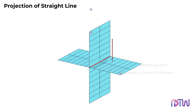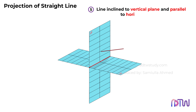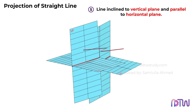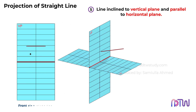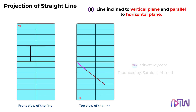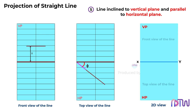Moving on to Position 5: the line can be inclined to the vertical plane and parallel to the horizontal plane. The line makes an angle with the vertical plane while remaining parallel to the horizontal plane. When we see it from the front view, the line looks shorter than its actual length because it is inclined at an angle with the vertical plane. When viewed from the top, we can see the line at an angle. This is how the line looks in the front and top views.